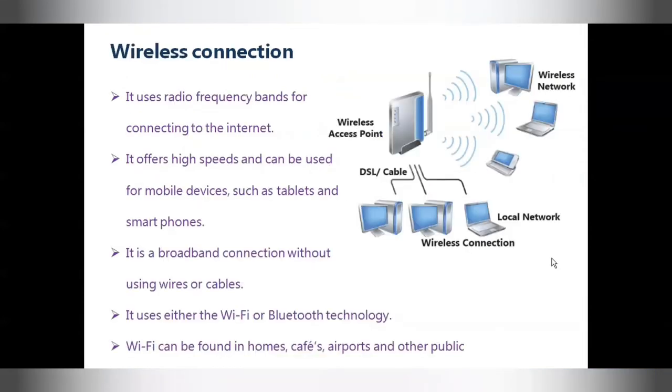The third one is the wireless connection. Wireless connection uses radio frequency bands for connecting to the internet. It offers high speeds and can be used for mobile devices such as tablets and smartphones. It is broadband connection without using wires or cables. It uses either the Wi-Fi or Bluetooth technology. Wi-Fi can be found in homes, cafes, airports, and other public spots.